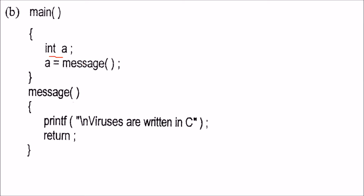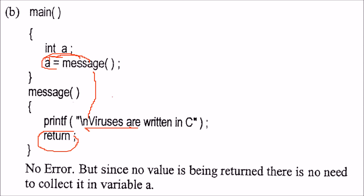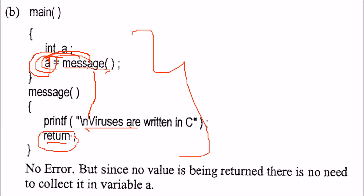This message has been assigned to a, but this message function is not returning anything. When it is not returning anything, you cannot assign it to a. The error is nothing in terms of syntax, but since we do not have any value being returned, there is no need to collect it in a.